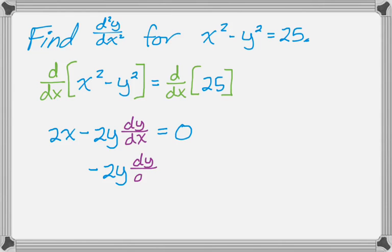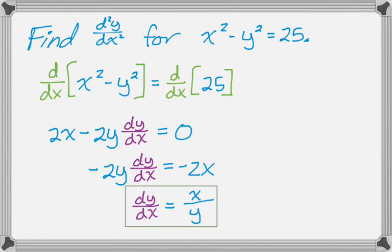And now I'm just going to solve for dy dx. So move that 2x over, divide through by 2y, cancel the negative 2s. So I get the first derivative, dy dx is equal to x over y.